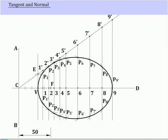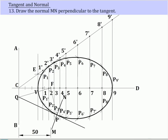Tangent and normal. Mark any point P on the curve. Join PF and draw FQ perpendicular to PF. Join QP and extend to get the tangent. Draw the normal MN perpendicular to the tangent.